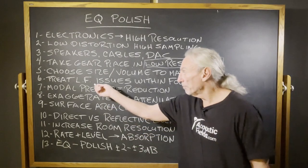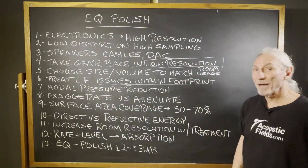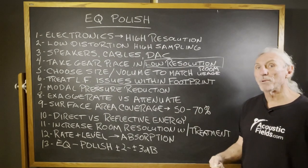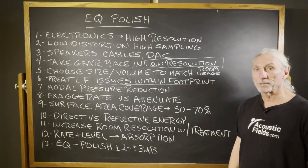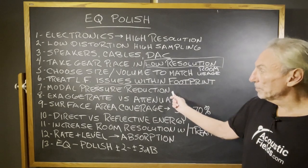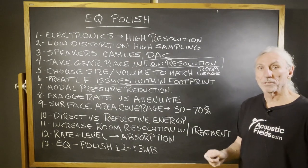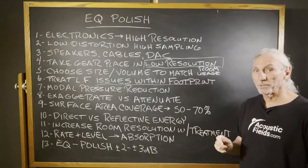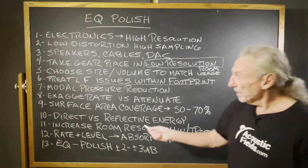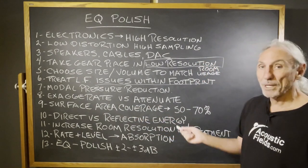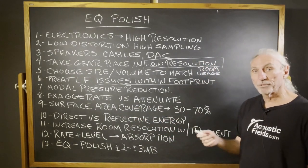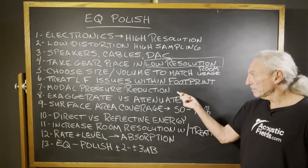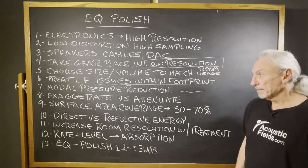We have to treat the low frequency issues first within the room — that's a must, because everything we do from that point on depends on that low frequency treatment. We have to reduce modal pressure: axial and tangential mode pressure, two-wall and four-wall pressure. We have to reduce it, because it'll exaggerate or attenuate certain octave bands. You're going to hear more of something and less of something, and neither is good. We want a nice, balanced response.